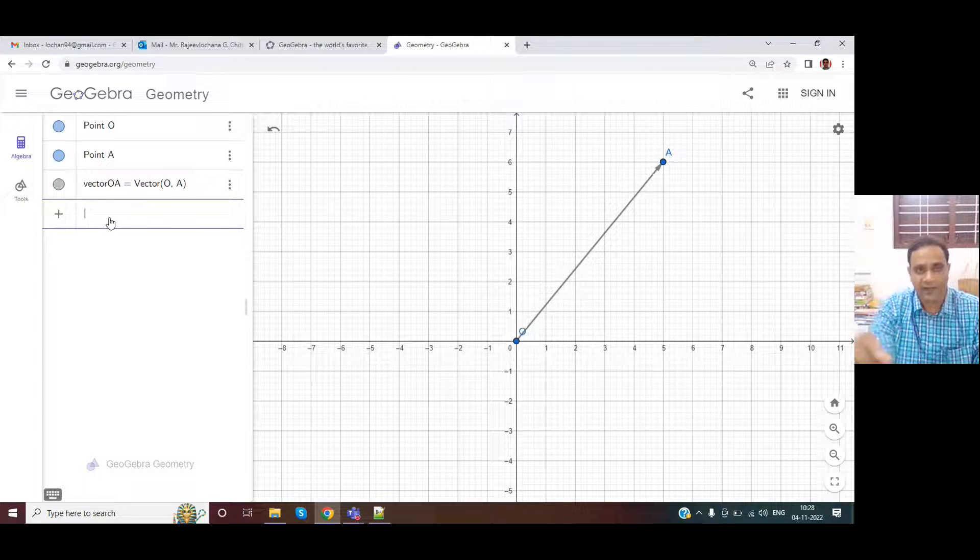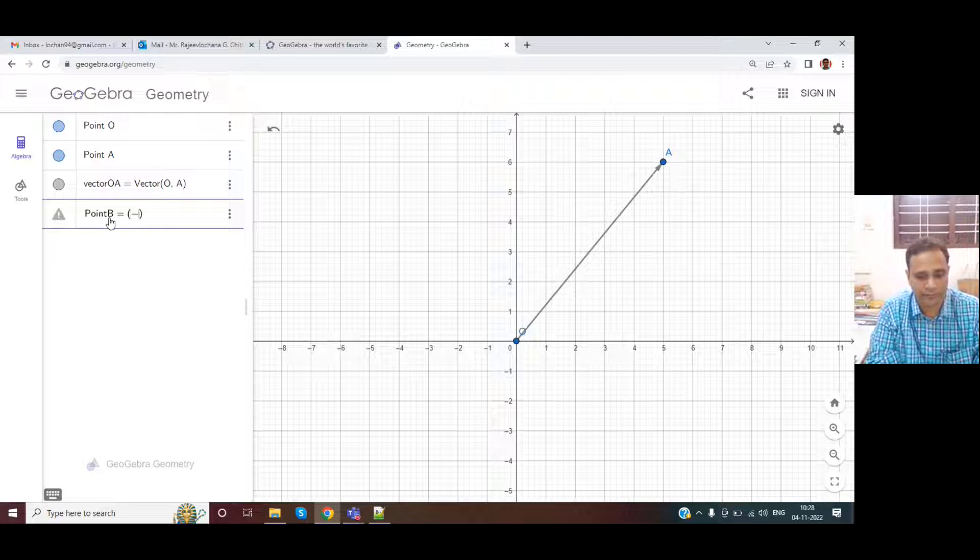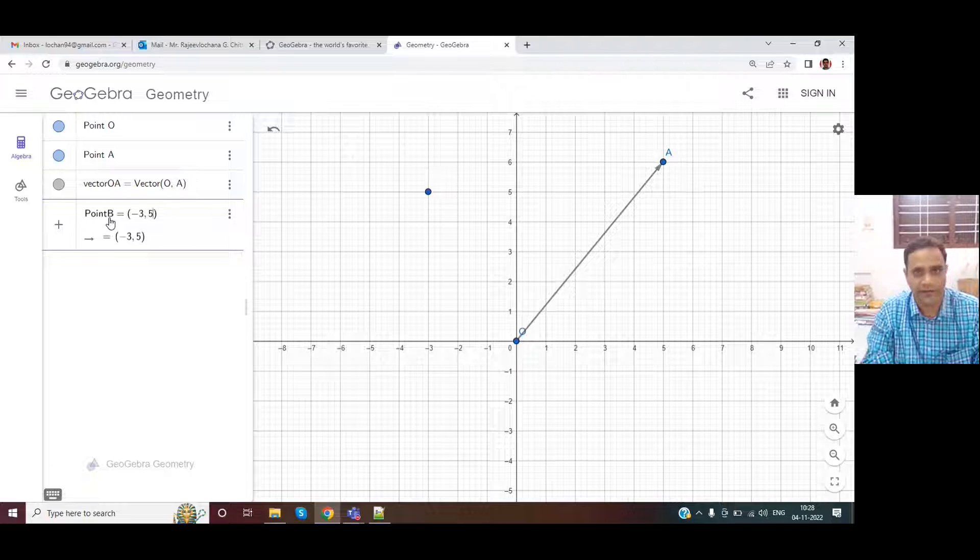Now if we have another point, let's say point B is equal to minus 3 comma 5. It's in the second quadrant.